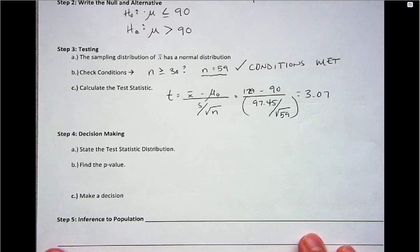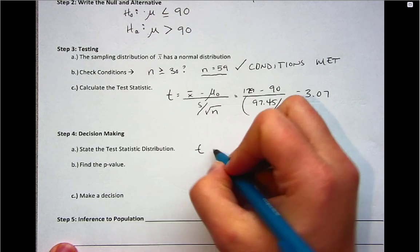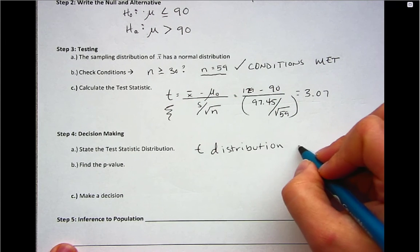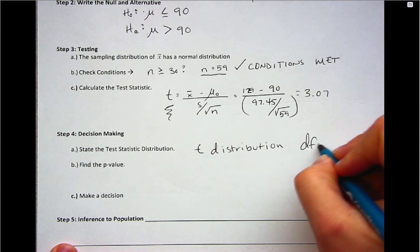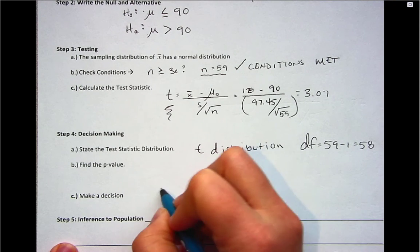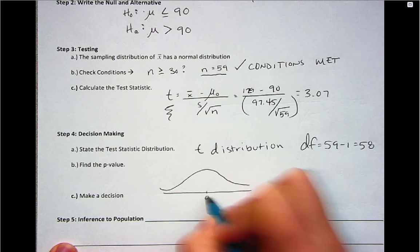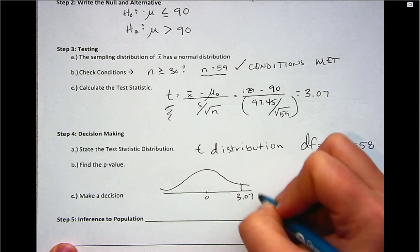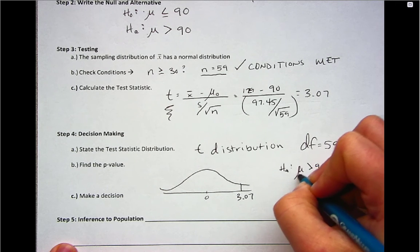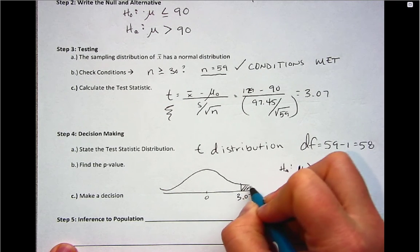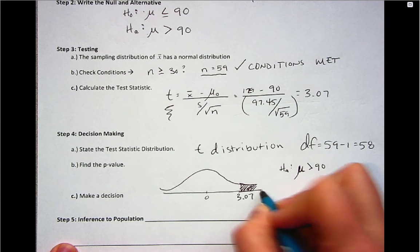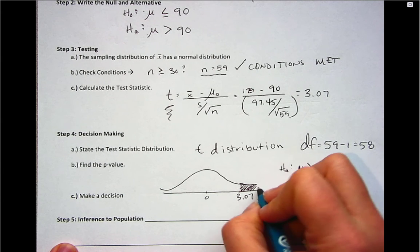So now we have the ability to make a decision on the null. First, remember we have a t distribution and we know that because we calculated a t test statistic with n minus one degrees of freedom. So n was 59, so we have 58 degrees of freedom. So then the t gives us a location on the curve. So these curves are centered at zero. 3.07 would put us here. And then also remember that the alternative helps us to know the direction we're interested or how to highlight. This is a right tail test because we're pointing this direction or the greater than side.